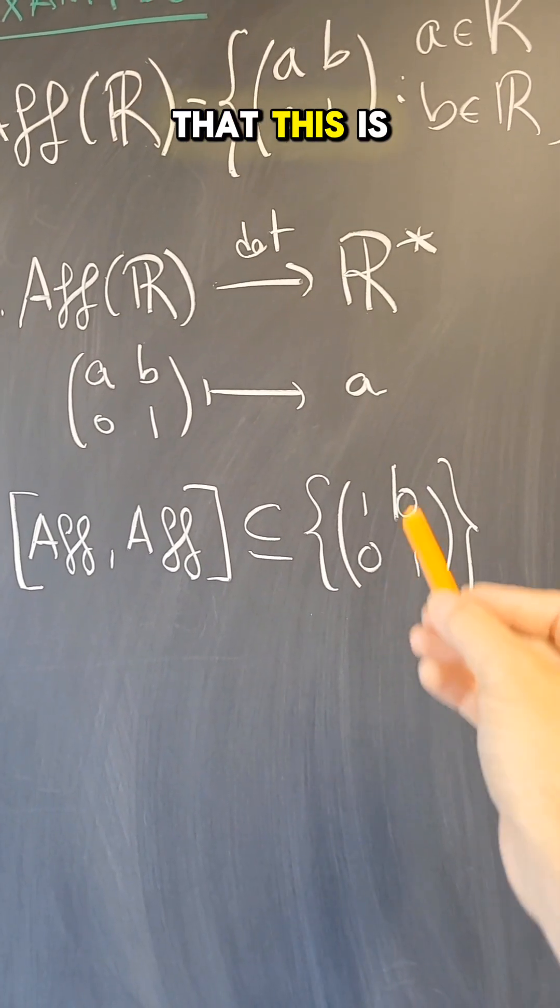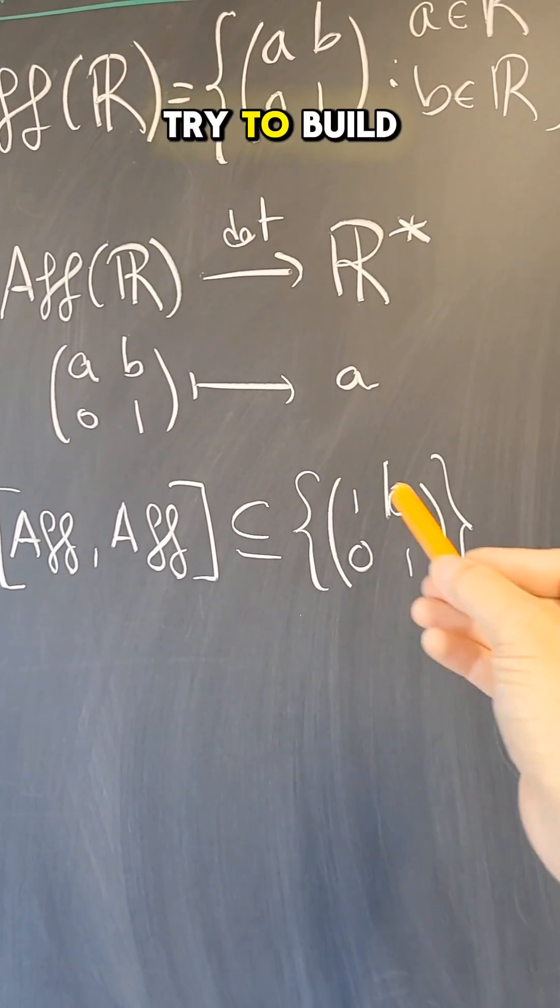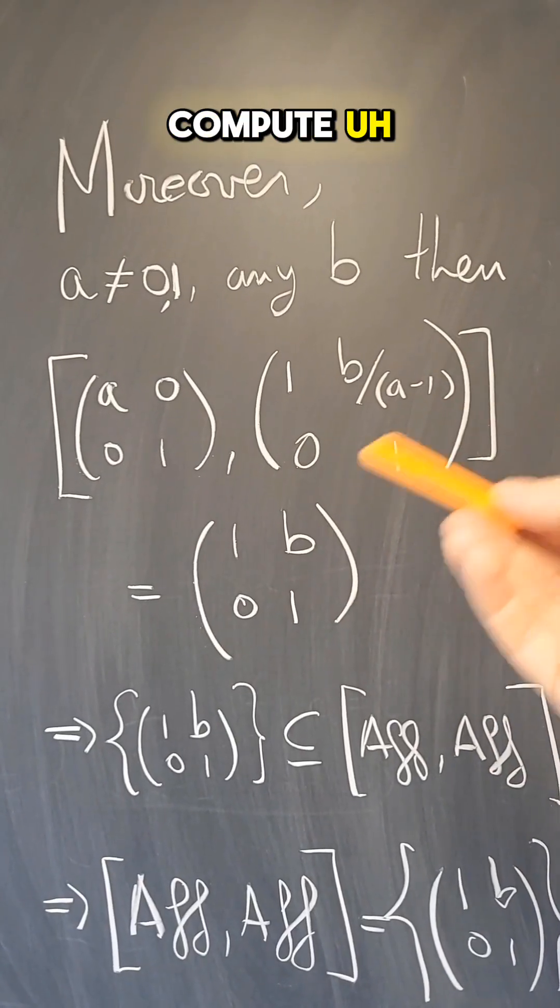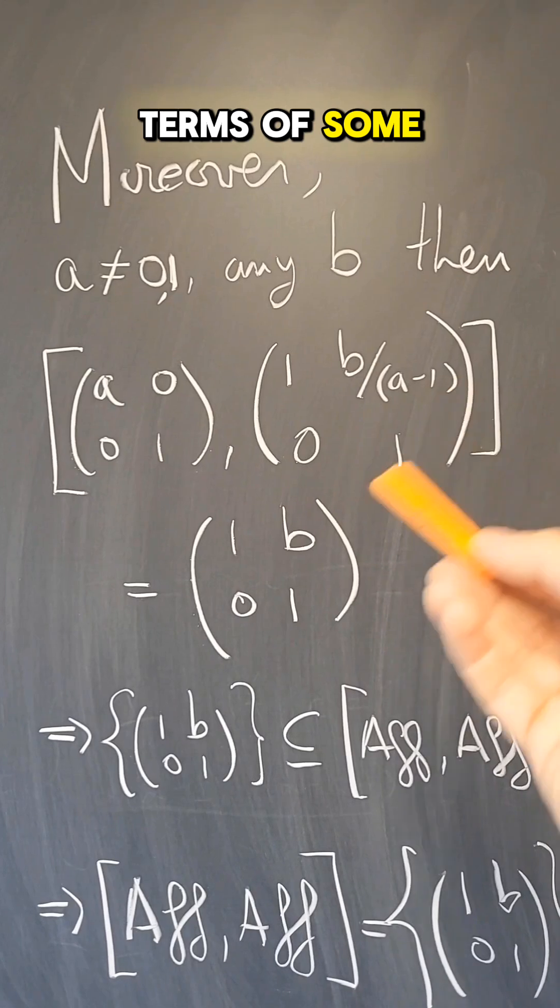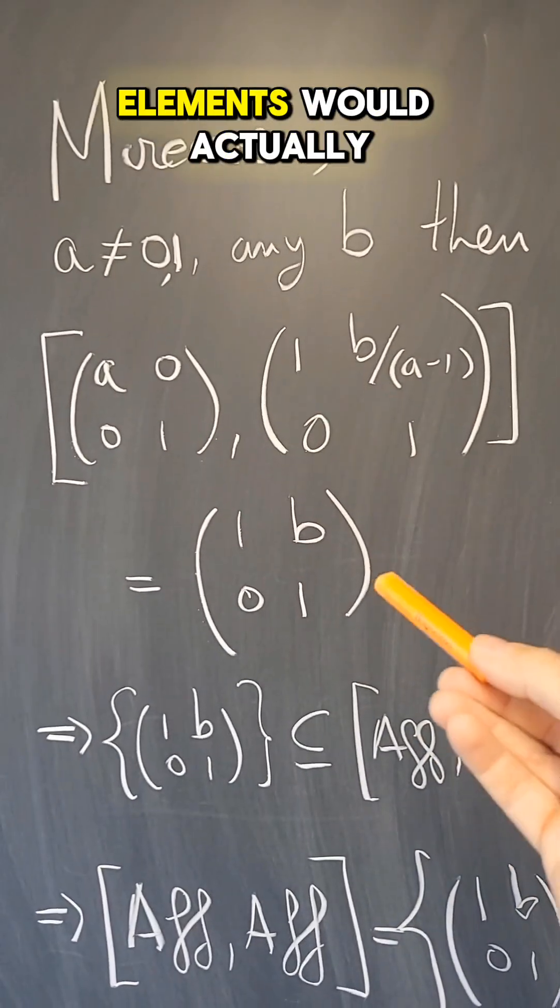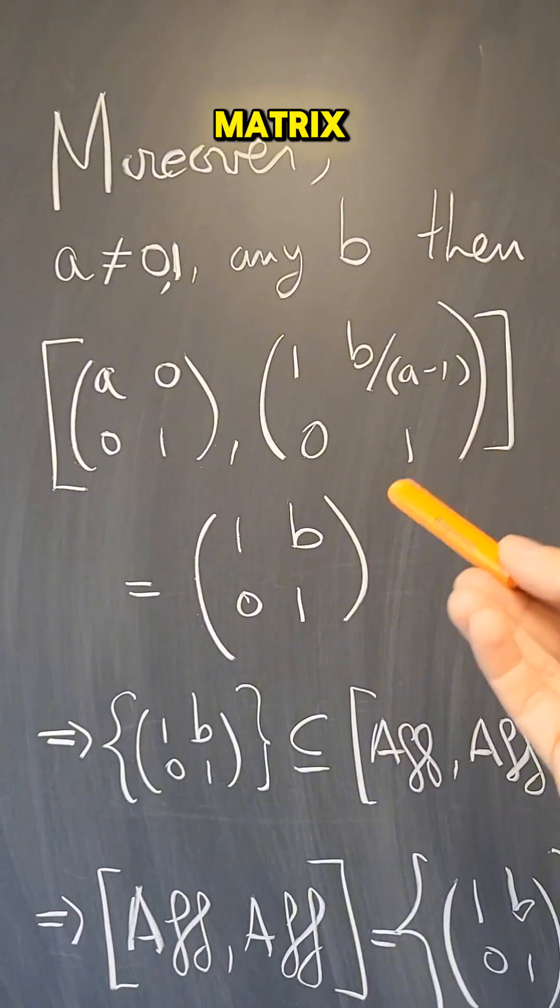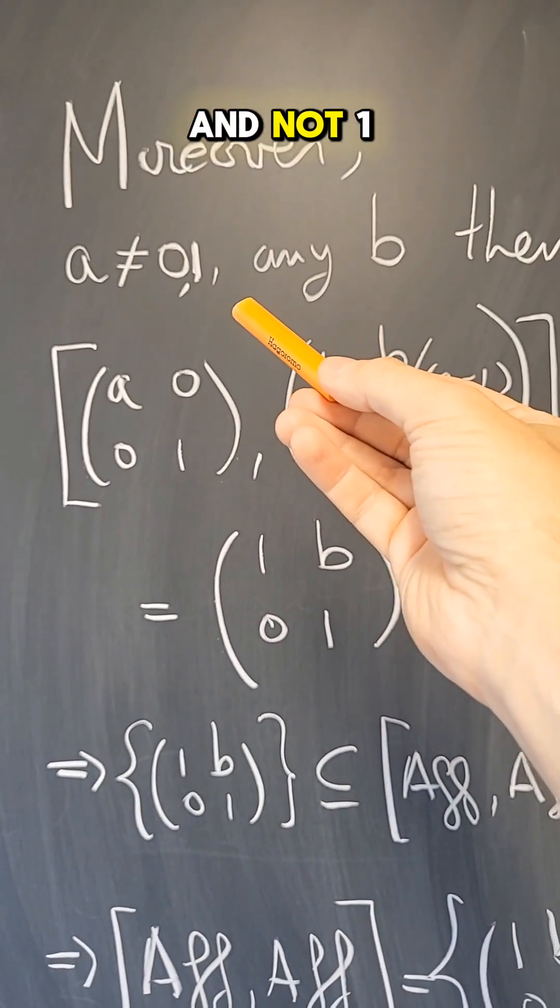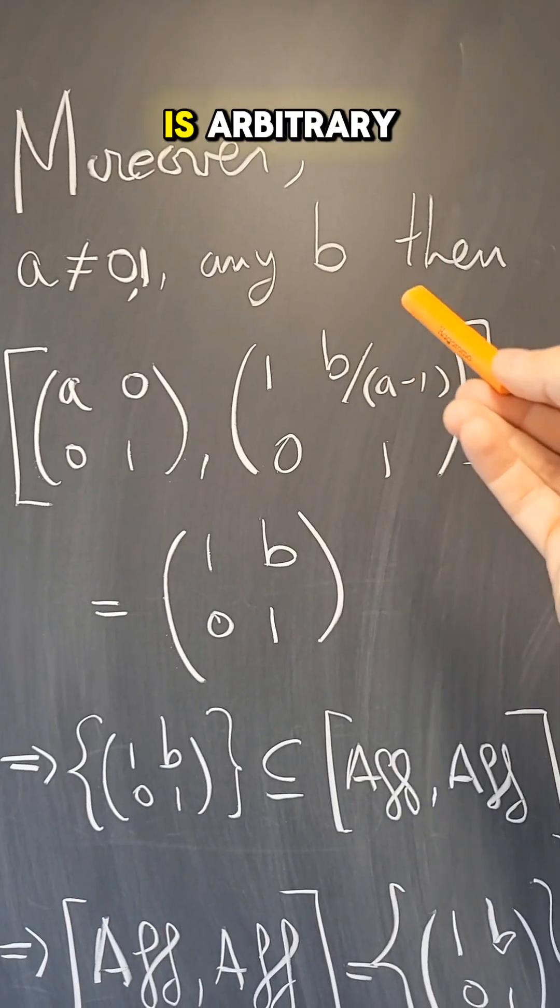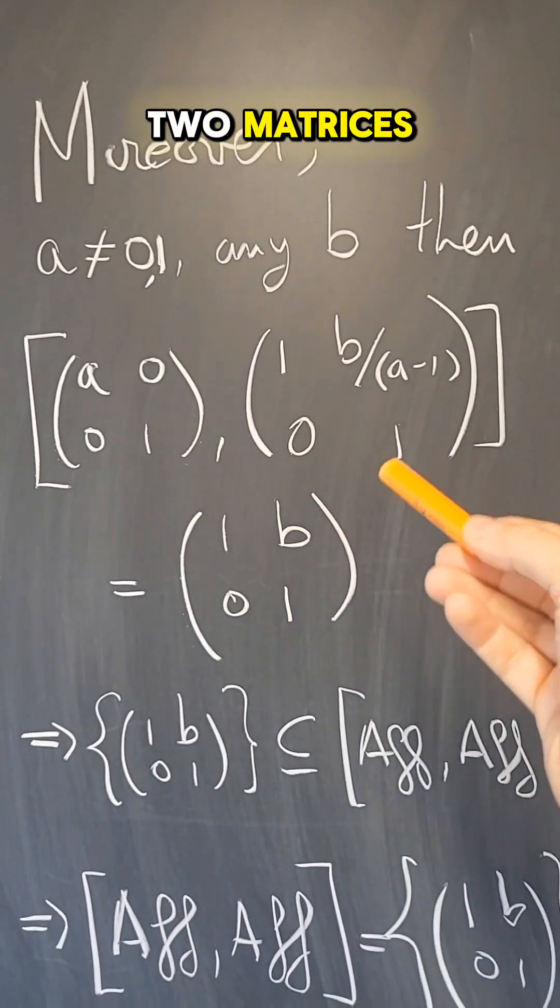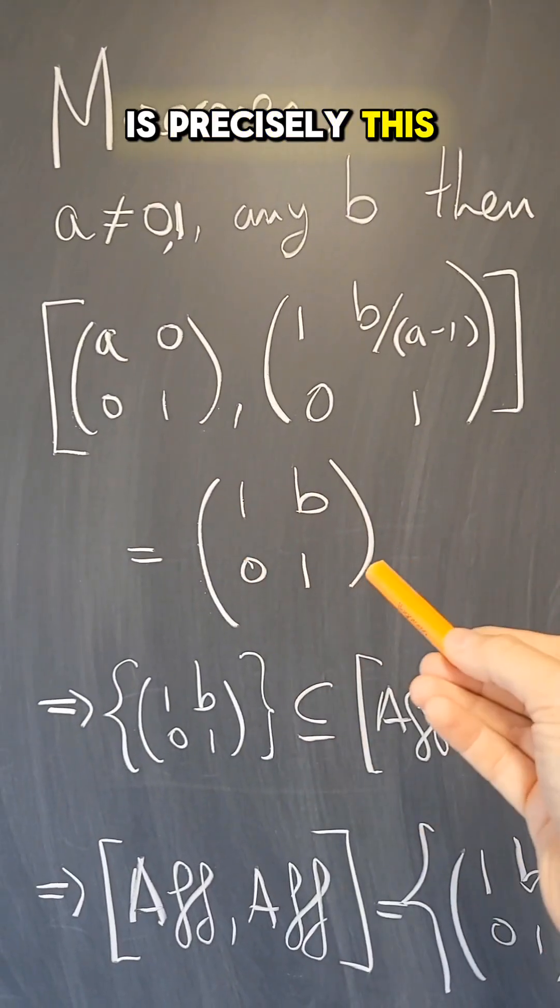So to check that this is the entire commutator, I need to try to build this matrix as a commutator element. And then you compute some commutators in terms of some generic elements just to see what combination of elements would actually give you this matrix. And you can figure out that if A is non-zero and not one, then if B is arbitrary, it turns out that the commutator element of these two matrices is precisely this matrix.